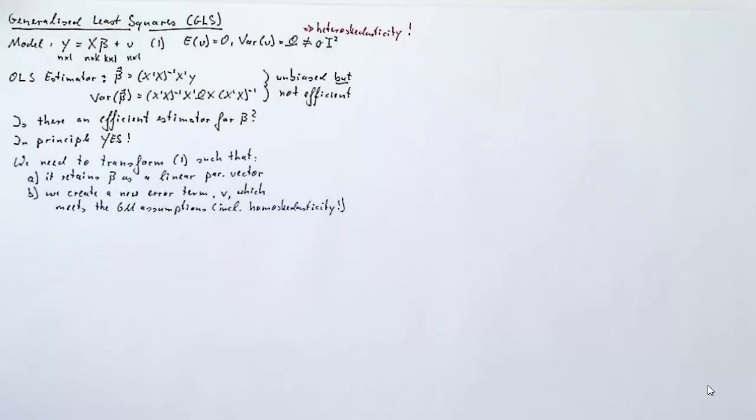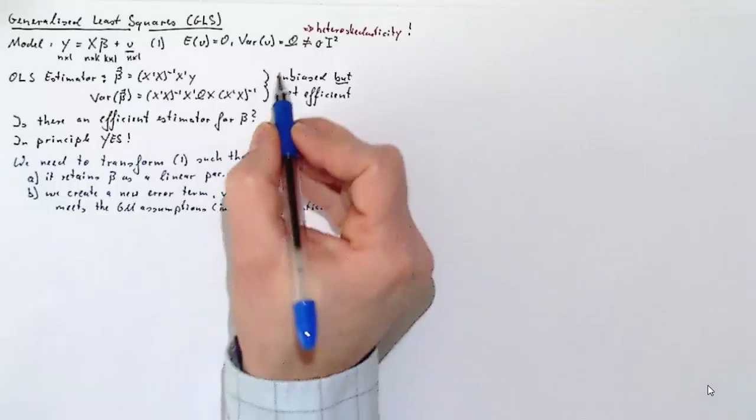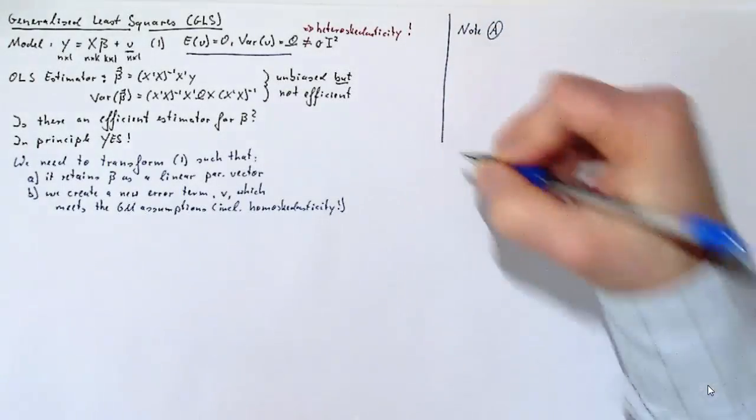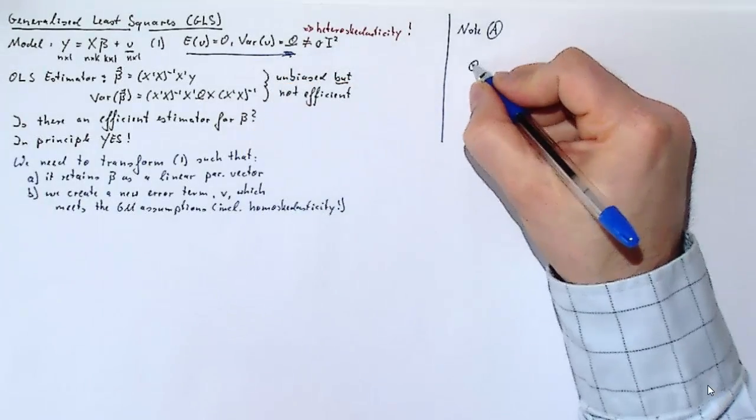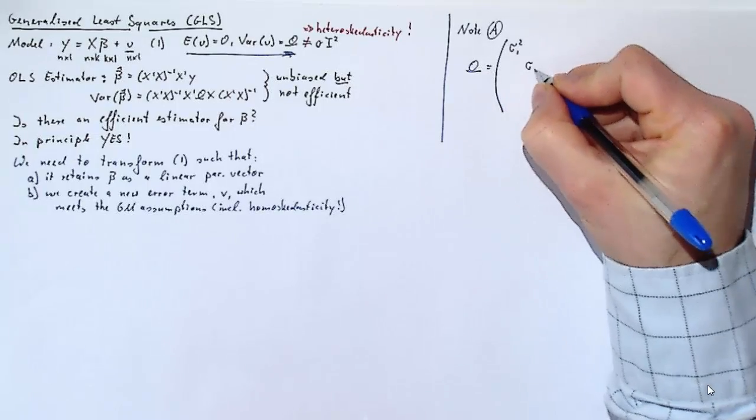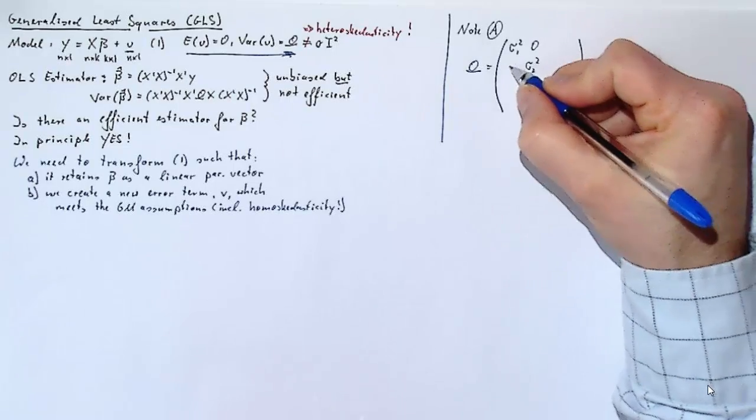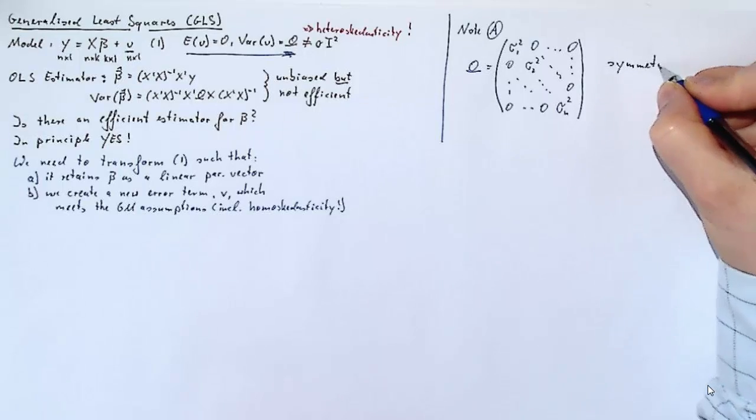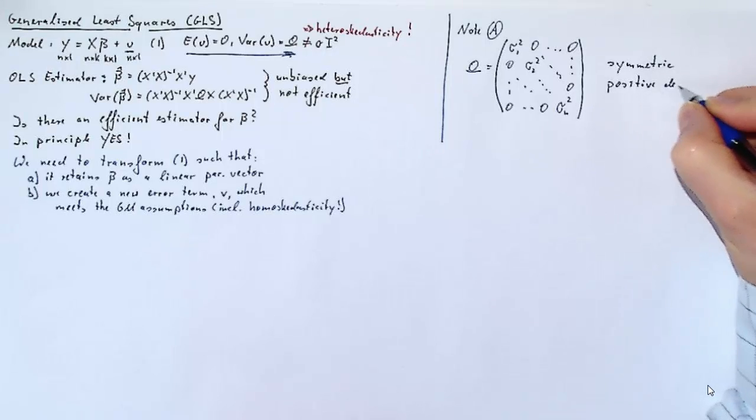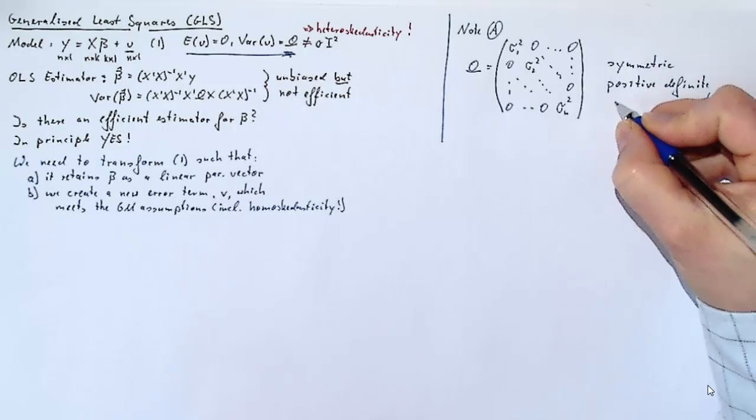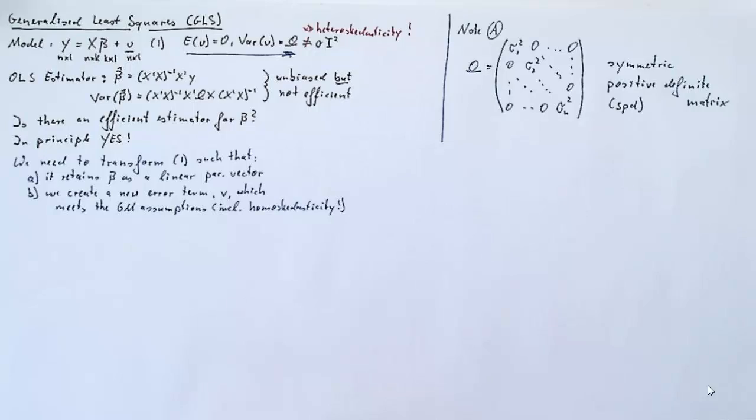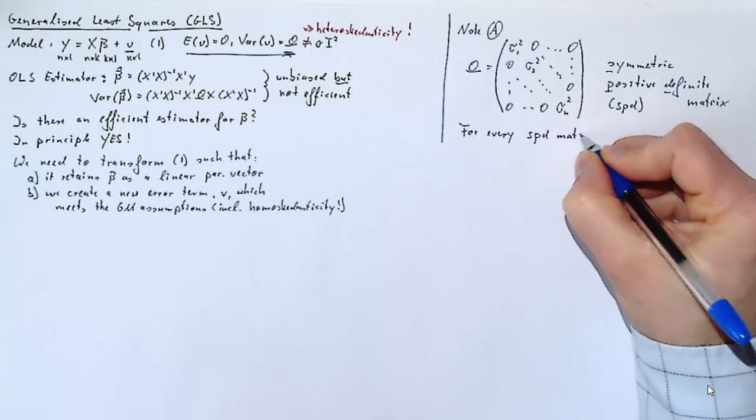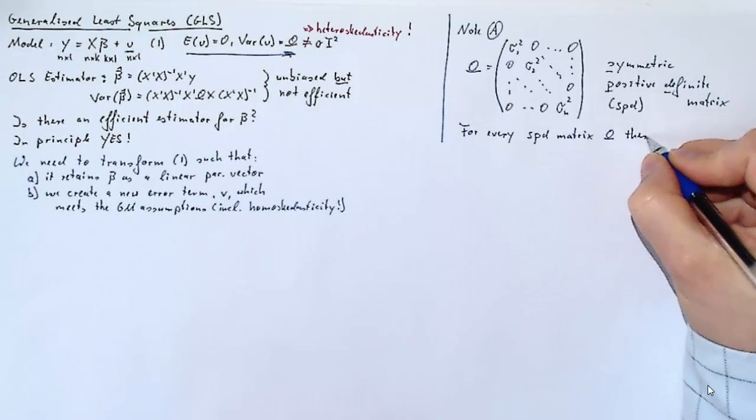Before we continue with this train of thought, we need to extend our mathematical toolbox a little bit. And we will have to think a little bit about this error term in particular, about the variance-covariance matrix for this error term, which we called omega. Omega will be an n-by-n matrix, and on the diagonal it will have the variances sigma-1 squared, sigma-2 squared, and so forth, for all the error terms. And we will assume that the error terms are non-autocorrelated with each other, so we have zeros everywhere else. Now, this is a symmetric and positive definite matrix.